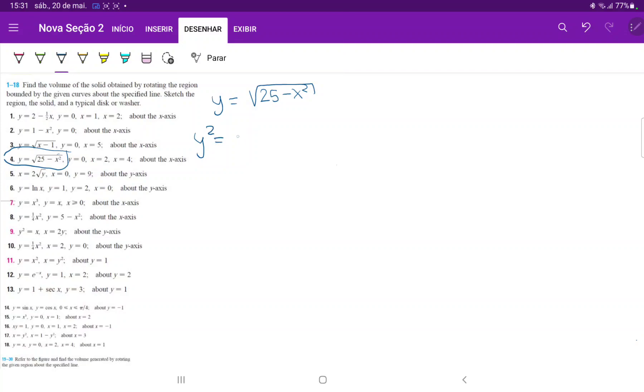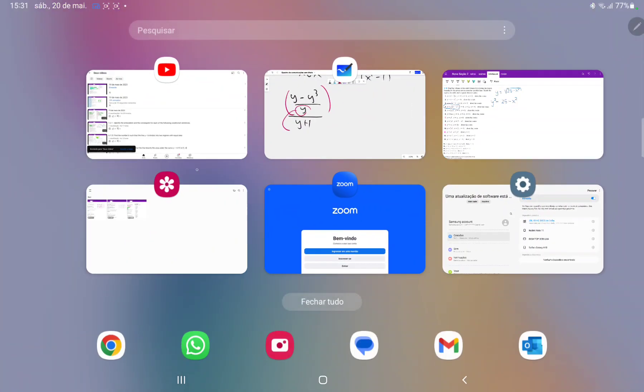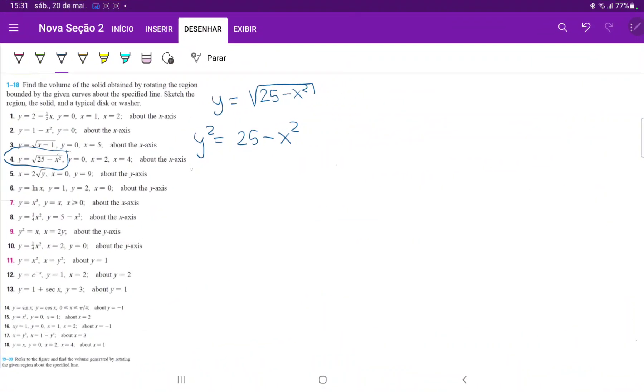If that confuses you, just rearrange this equation. We're going to square both sides. So y squared is equal to 25 minus x squared. And then we'll bring the x squared over to the other side. So I have y squared plus x squared is equal to 25.